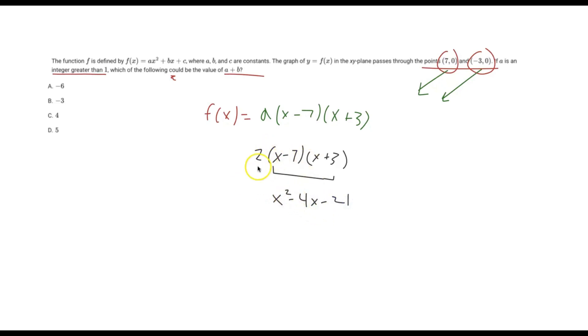So then we have to apply the 2 to the outside. We have to multiply this entire thing by 2. So then we get 2x² - 8x - 42.